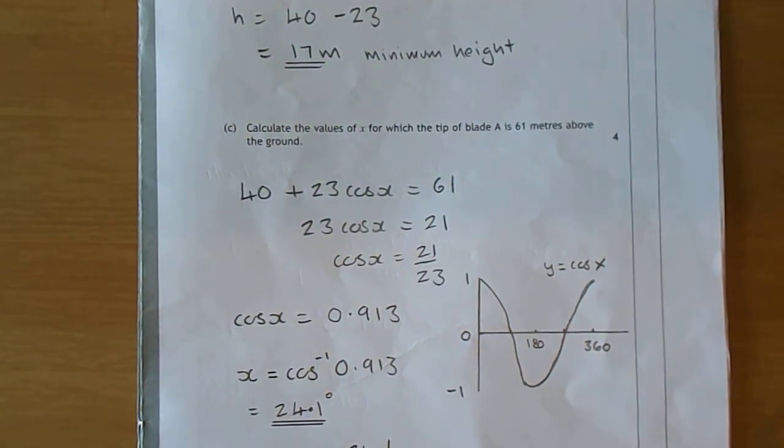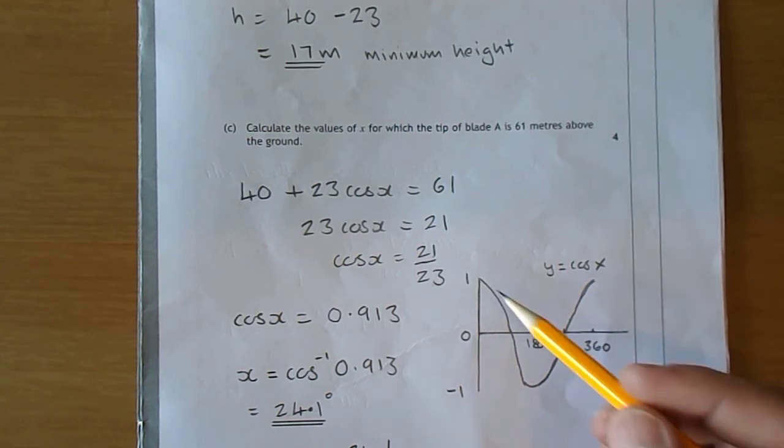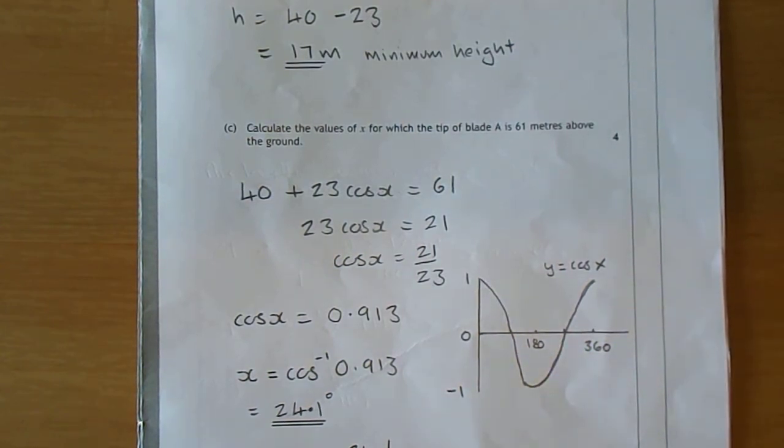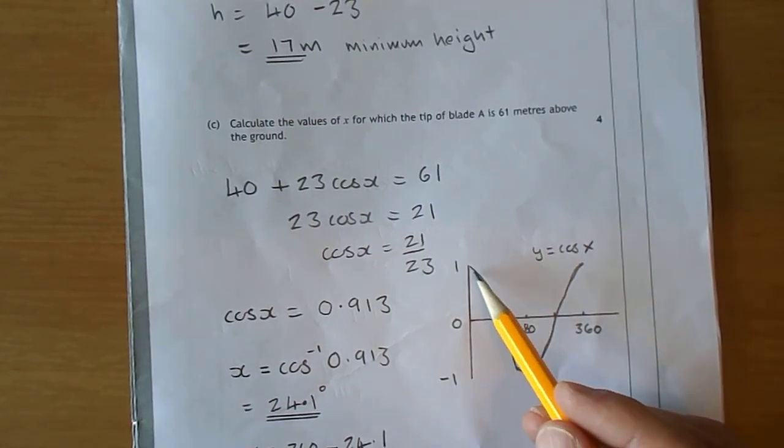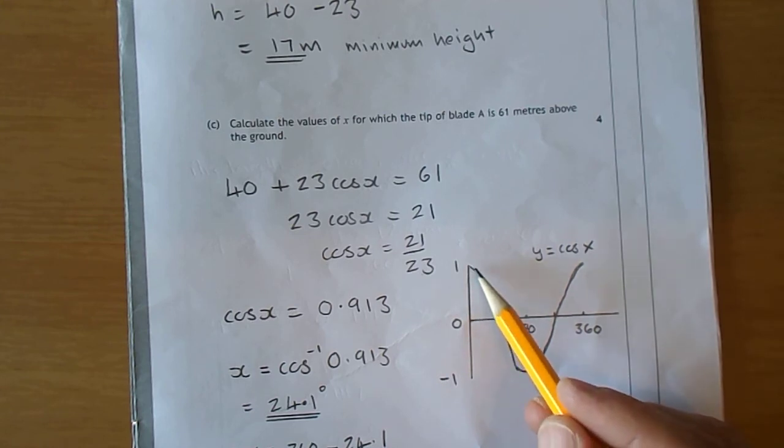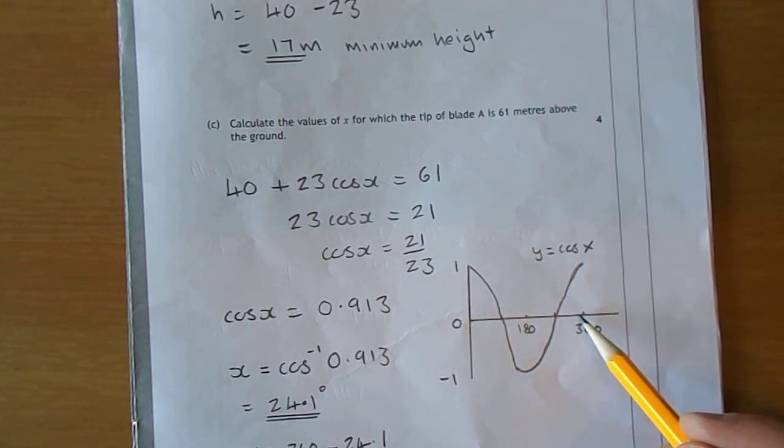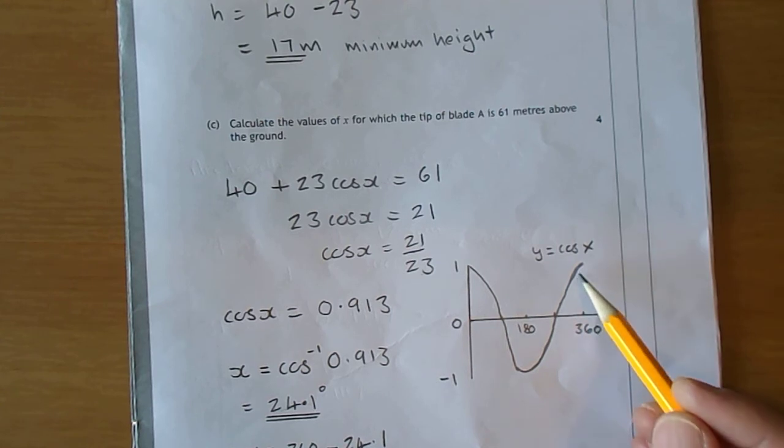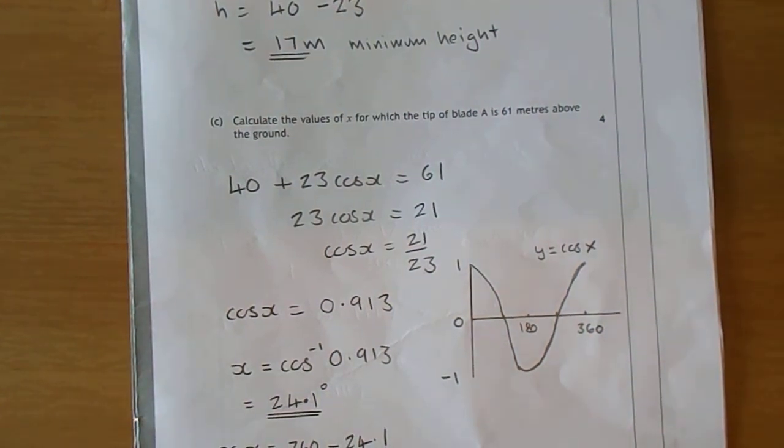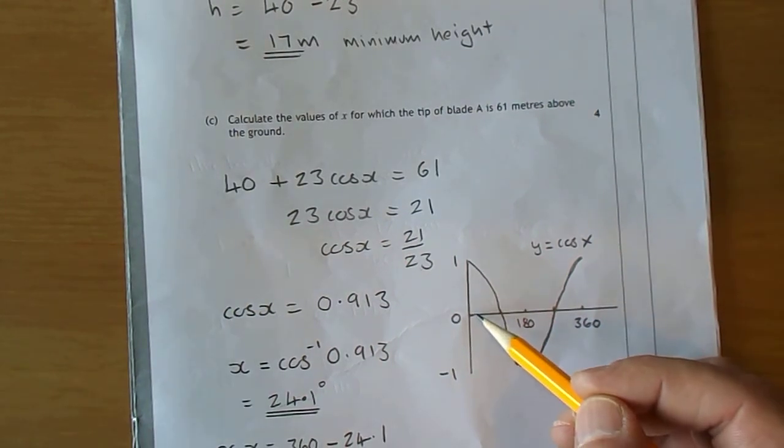We're wanting the two values within the cos graph between 0 and 360. Here's a quick diagram of cos(x). Where is cos(x) = 0.913? That's pretty close to 1, at 0.913 here, and over here just shy of 360, up there somewhere. Do inverse cos of 0.913 and you get 24.1 degrees.